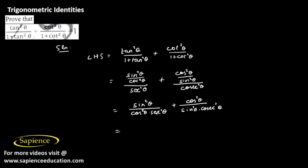Cos theta into secant theta equals 1, and sine theta into cosecant theta equals 1. So we get sine squared theta plus cos squared theta, and since sine squared theta plus cos squared theta equals 1, which is the right hand side, hence proved.